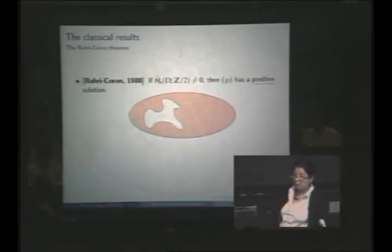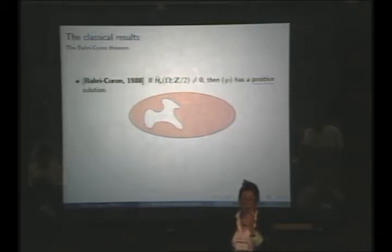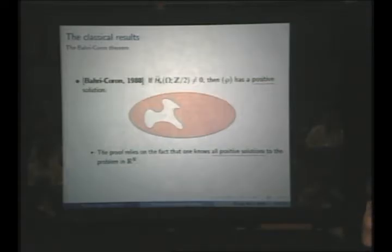The proof uses fancy algebraic topology, but also uses the fact that one knows all positive solutions of the problem on the whole Euclidean space ℝⁿ. The condition means, roughly, that if you have a domain which is not contractible, then you have a solution. Brezis-Coron say: if your domain has some topology, then there is a positive solution.